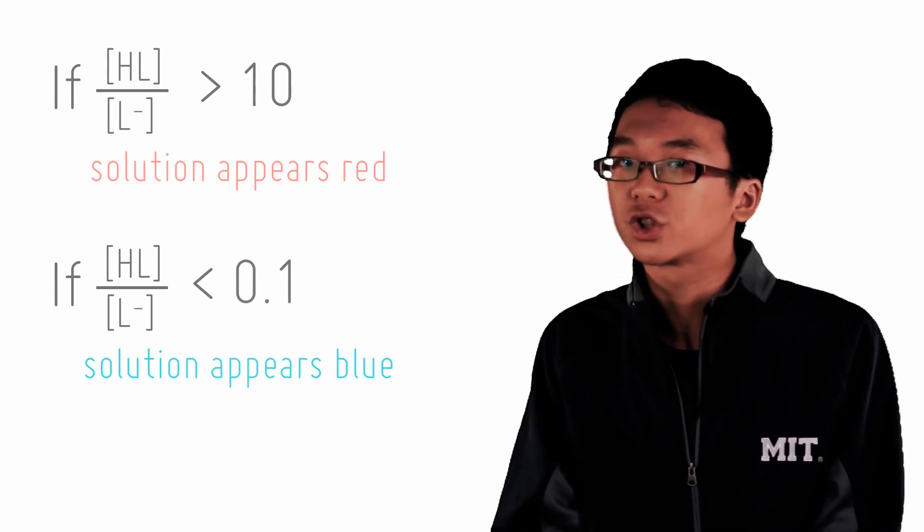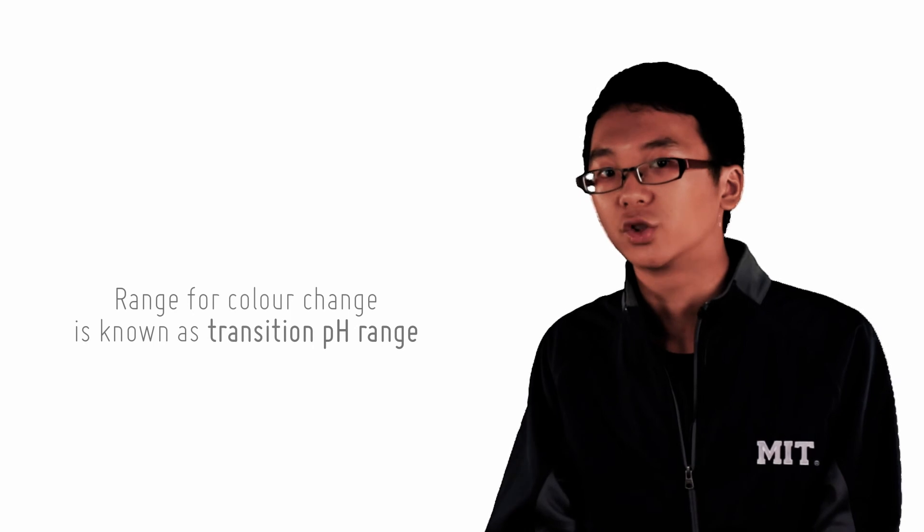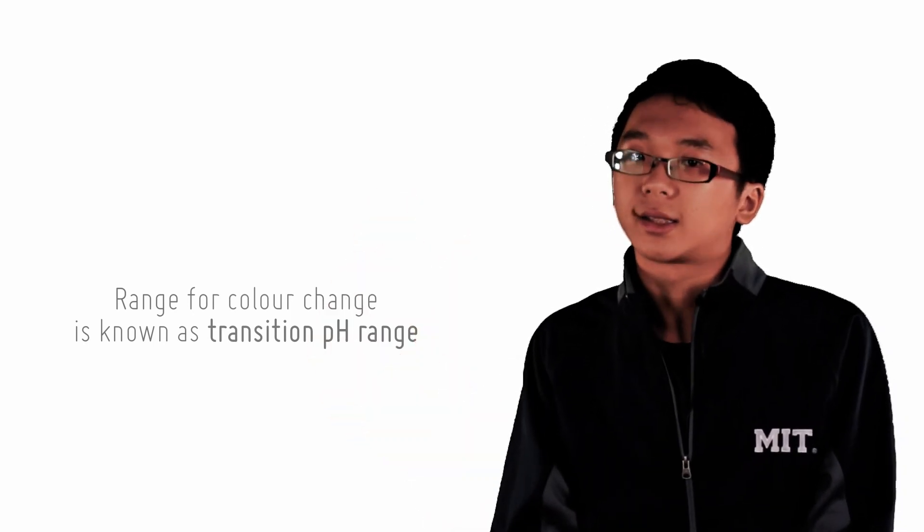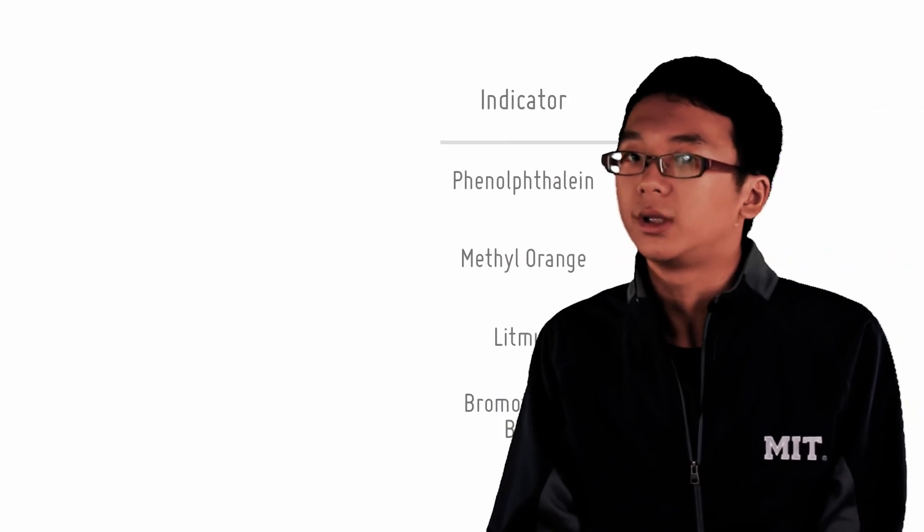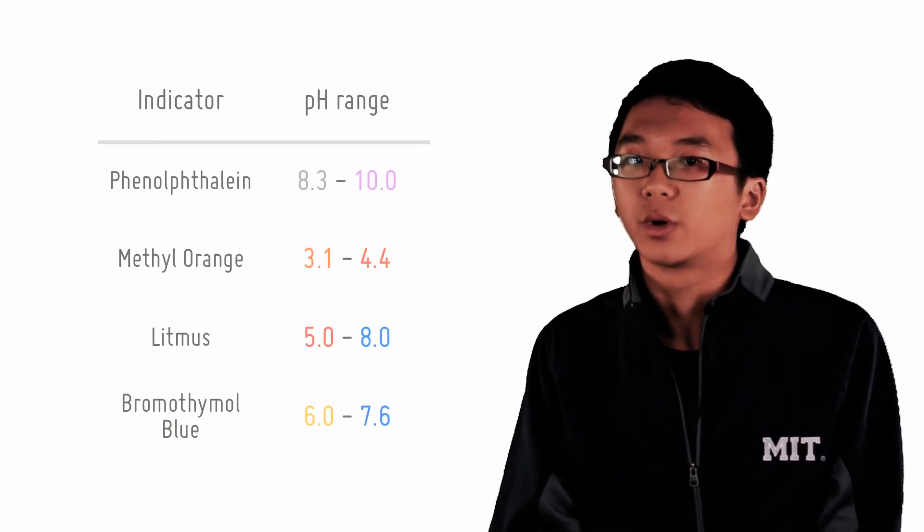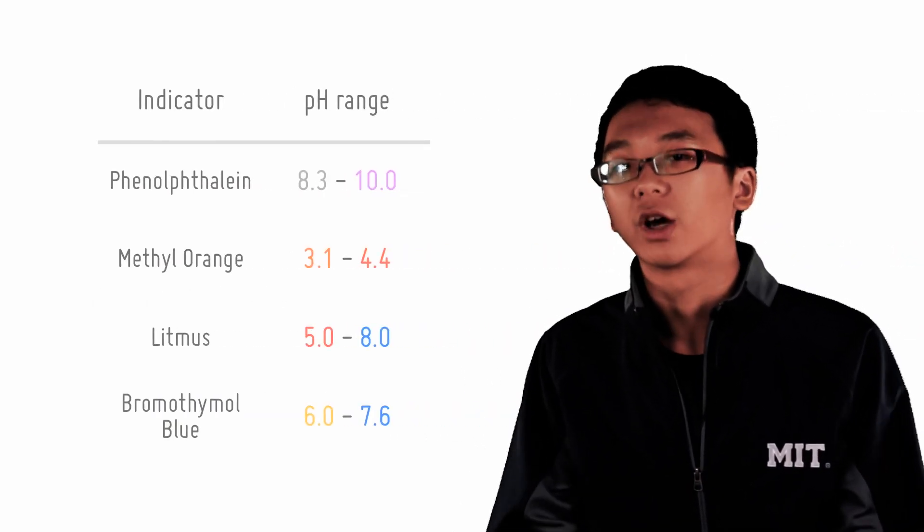The pH range over which the color of the indicator changes is called the indicator pH range. Here are the pH ranges of some of the more common indicators. You don't need to memorize this at the moment as we will go through this again in the next few checkpoints.